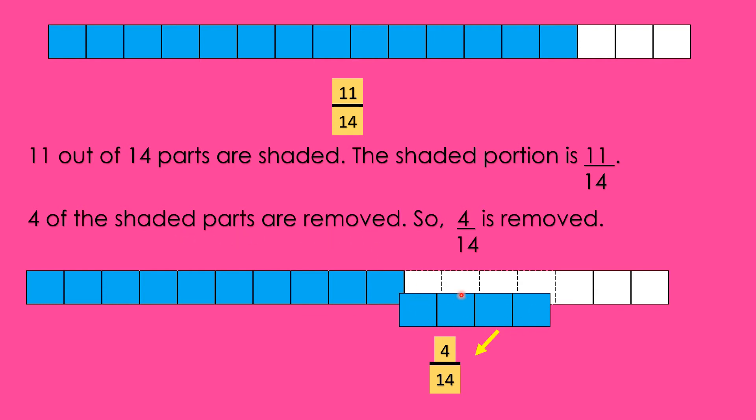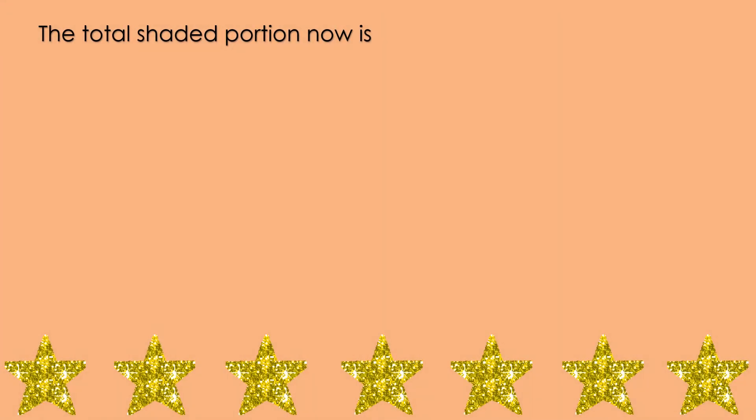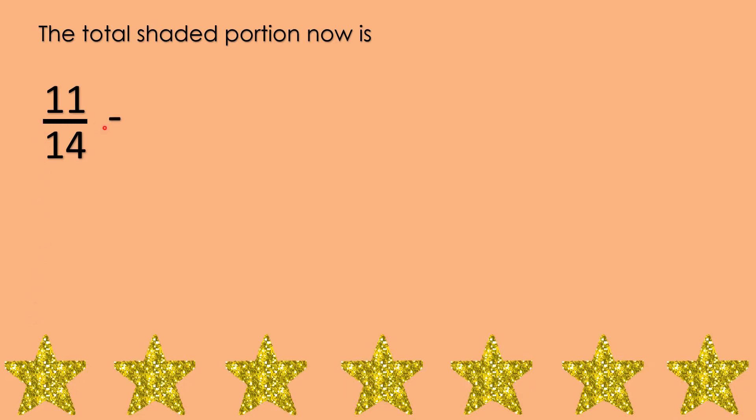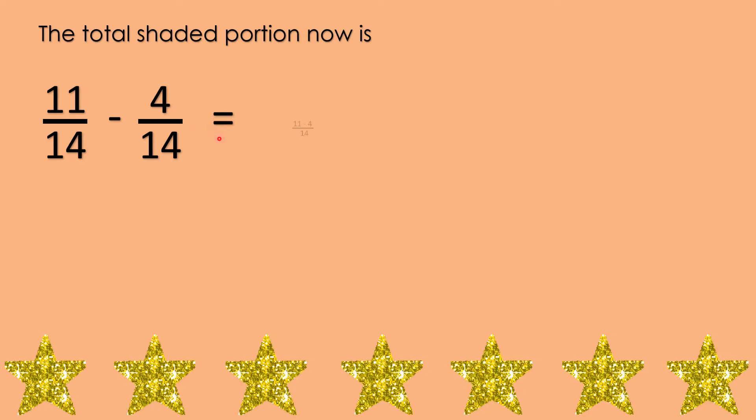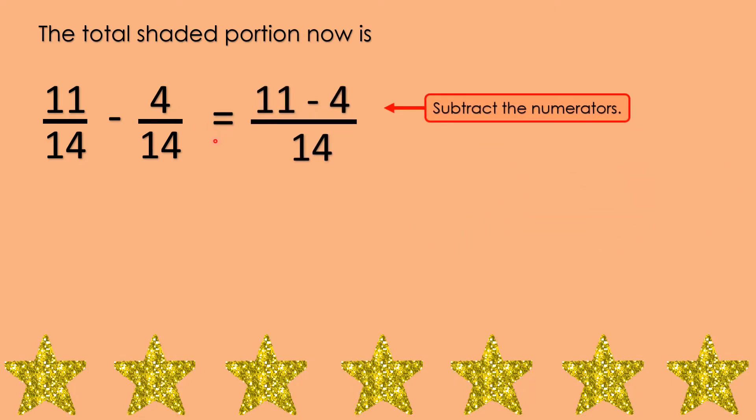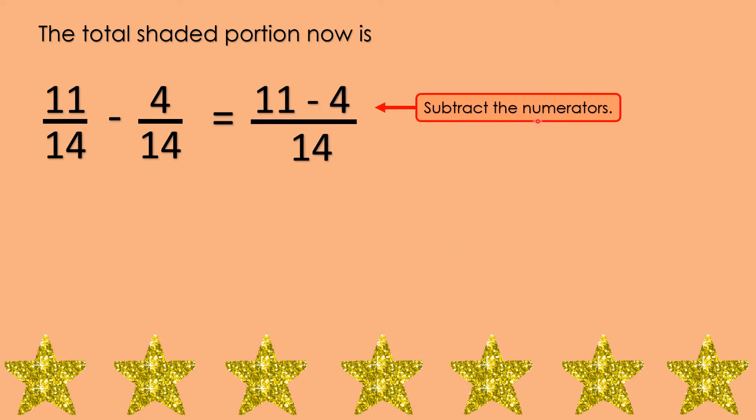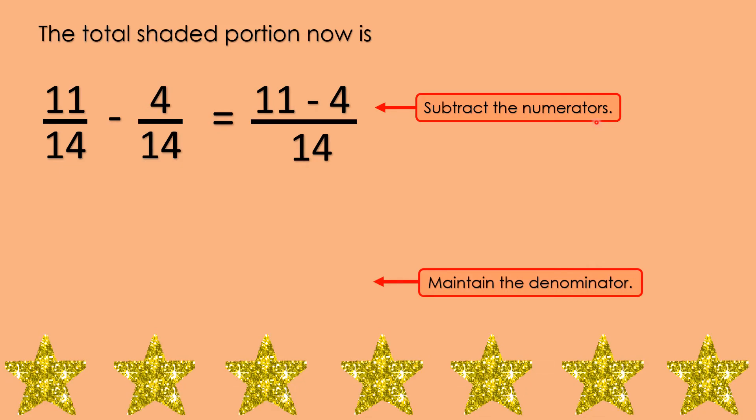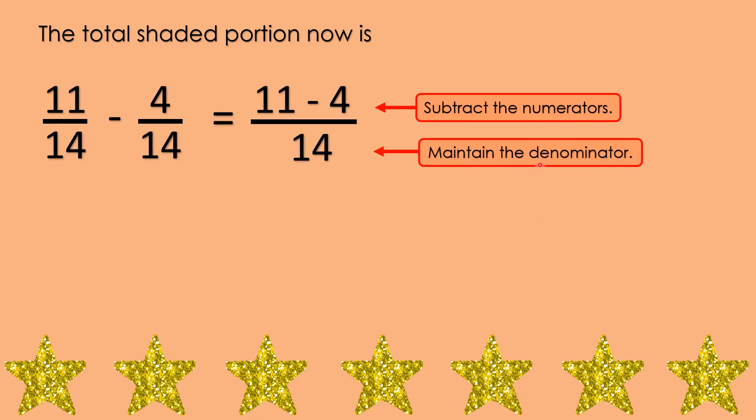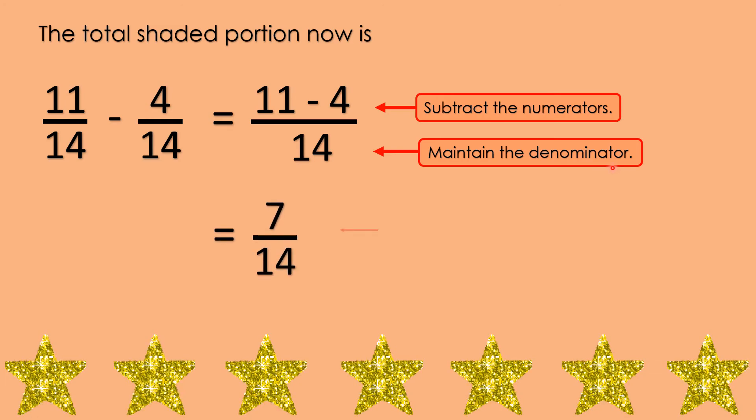Look here. 1, 2, 3, 4. So, 4 fourteenths is removed. Let's subtract the fraction. 11 fourteenths minus 4 fourteenths equals? Alright! You are going to subtract the numerators. And, then, maintain the denominator. So, how is it?